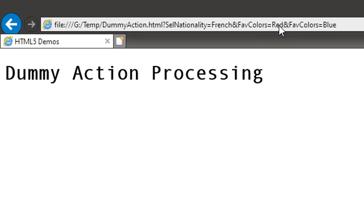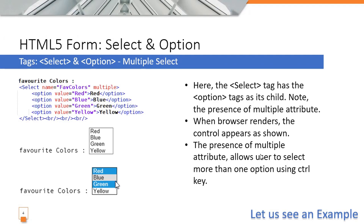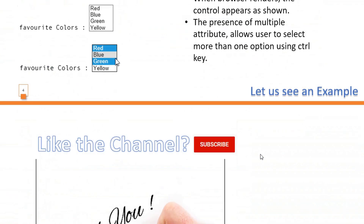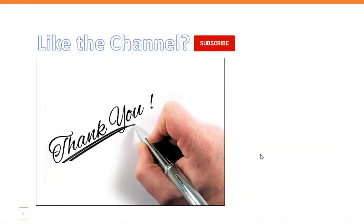The name 'select nationality' is given to the select tag and the option value 'French' is sent as the value. That's all for this video — thank you for watching. If you like the channel, please subscribe.